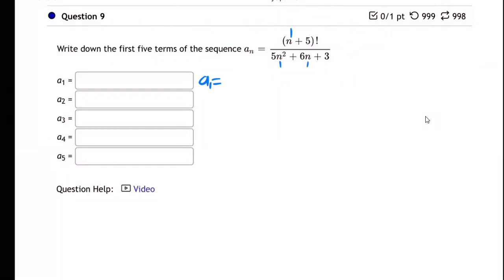Plug in 1, let's see what we get. We get 1 plus 5 factorial all over 5 times 1 squared plus 6 times 1 plus 3. So what is that? Well, that is 6 factorial over 5 times 1...